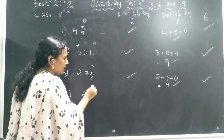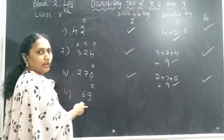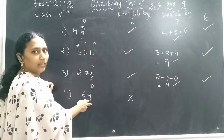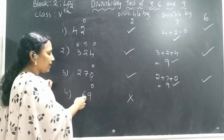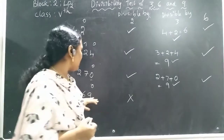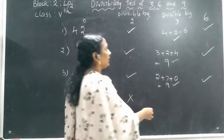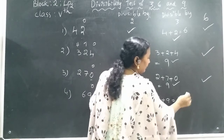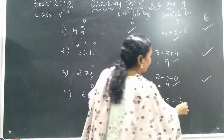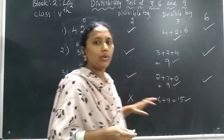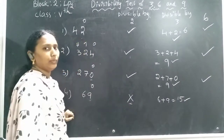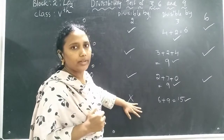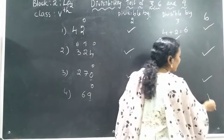Next number: 69. What is at the ones place? 9. Is 9 an even number? No — we need 0, 2, 4, 6, or 8. So 69 is not divisible by 2. For divisibility by 3: 6 plus 9 equals 15. Is 15 in the 3 times table? Yes — 3 times 5 is 15. But is 69 divisible by 6? No, because it is not divisible by 2. The number must be divisible by both 2 and 3 to be divisible by 6.